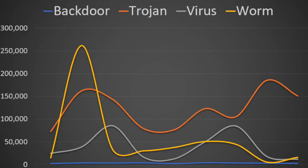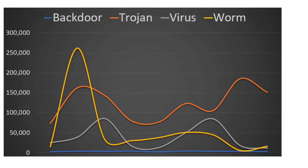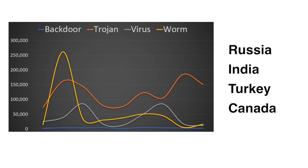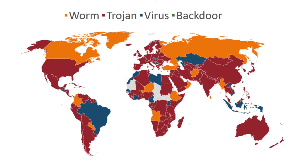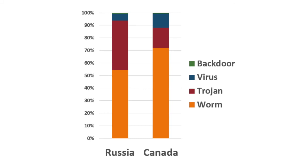This line diagram from the beginning of August shows the relative detection rate by malware type over a 7-day period. You can see a massive worm spike in yellow, with significant worm activity happening in Russia, India, Turkey, and Canada. This map chart from the same period indicates the most prolific malware type for each country, and you can see that worm in orange started to dominate in Russia and Canada in August.